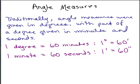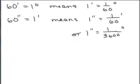It's really similar to time where you've got 60 seconds in a minute and 60 minutes in an hour. So we've got that 60 minutes equals one degree. That means one minute is just a 60th of a degree, just like one minute is a 60th of an hour if you want to think about time.